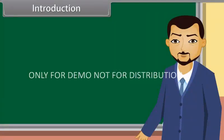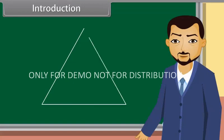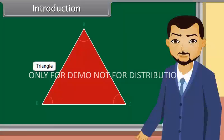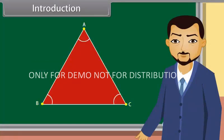Students, you must have studied about closed figures. Now, what do we call the figure which is formed by three intersecting lines? A triangle! Yes, you are right, Rahul. A triangle. It has three sides, three angles and three vertices.